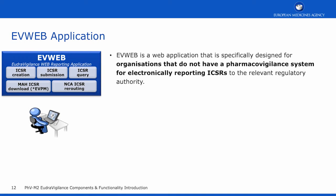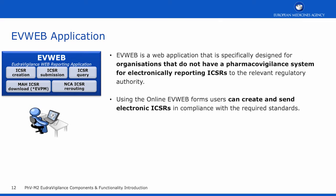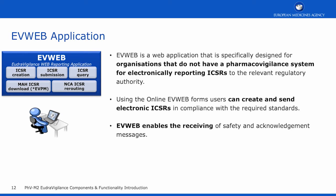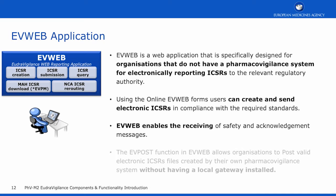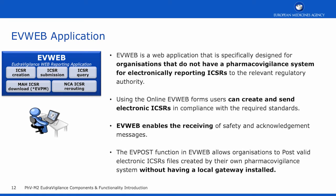The EudraVigilance web application, EVWeb, is specifically designed for organisations that do not have a pharmacovigilance system for electronically reporting ICSRs to the relevant regulatory authorities. Using the online EVWeb forms, users can create and send electronic ICSRs in compliance with the required standards. EVWeb also enables the receiving of both safety and acknowledgement messages. The EVPost function in EVWeb allows organisations to post valid electronic ICSR files created by their own pharmacovigilance systems without having a local gateway installed.